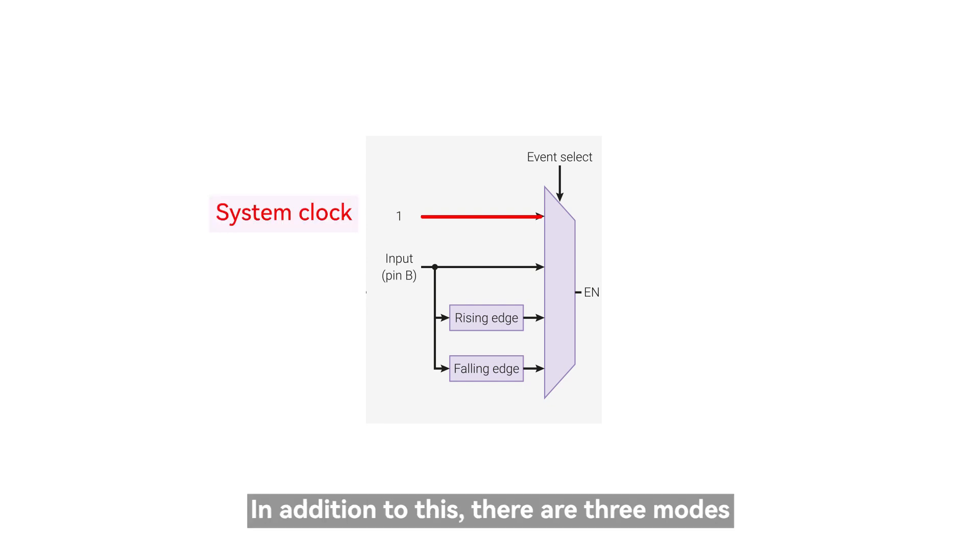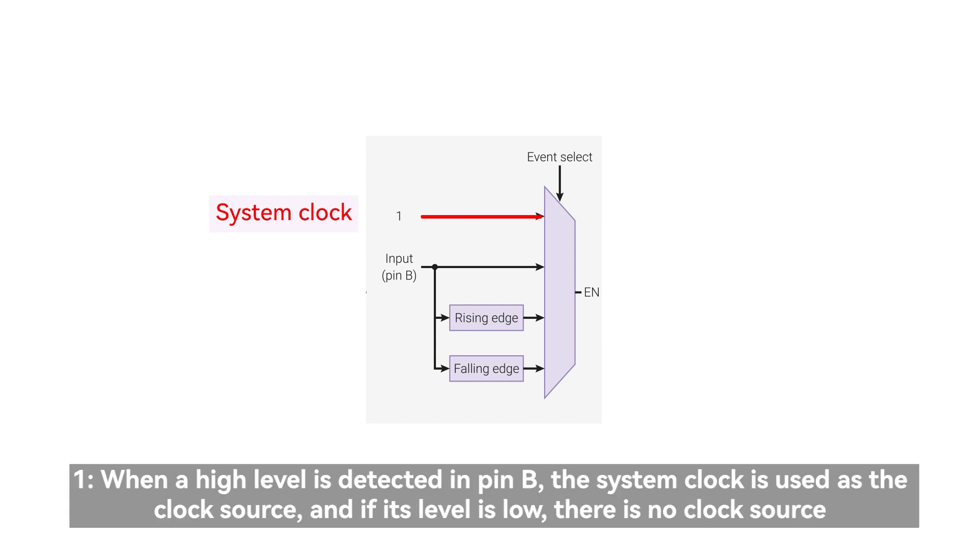In addition to this, there are three modes. Mode 1: when a high level is detected in pin B, the system clock is used as the clock source, and if its level is low, there is no clock source.